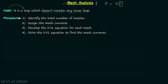Now we will move on to the steps required to perform the mesh analysis. Step number one is to identify the total number of meshes. You will be given a network and in that network you need to identify the total number of meshes — loops having no loops inside. Once we are done with identifying the total number of meshes, in step number two we assign the mesh currents. The mesh current is the current that flows only around the perimeter of a mesh, so all identified meshes will have their individual mesh currents.